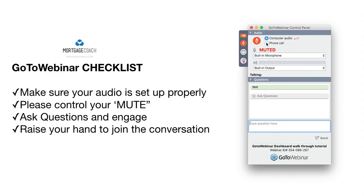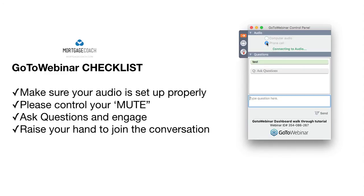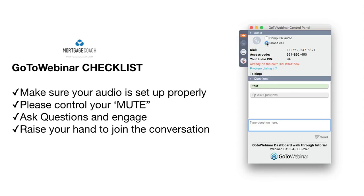If you want to switch to telephone, click telephone and you can call in. Make sure when you call in, you put in your audio code. That will link you to the system and allow us to unmute you.